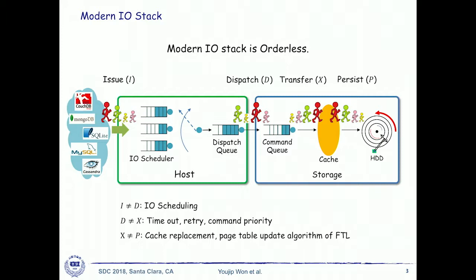The incoming order and outgoing order differ because of live scheduling activities like CFQ. The order in which commands are dispatched to the storage device and the order in which they are serviced differ due to timeouts, retries, and command priority. The order in which data blocks reach the storage surface also differs from the transfer order, due to cache replacement algorithms and page table updates like FTL versioning. There are a full bunch of uncertainties in the modern I/O stack.